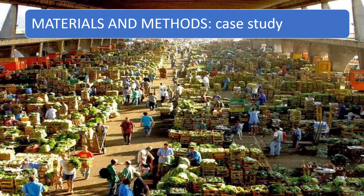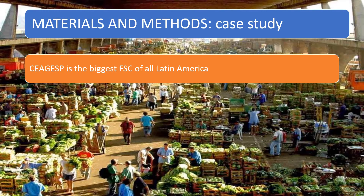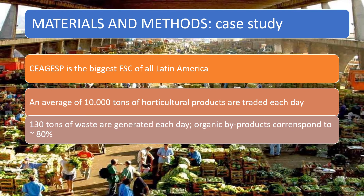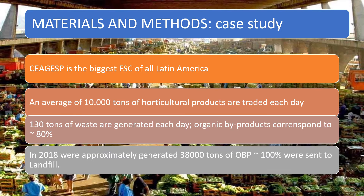Case study. Seagespi is the biggest food supply center in all of Latin America. An average of 10,000 tons of horticultural products are traded each day, and 130 tons of waste are generated each day — organic byproducts correspond to 80%. In 2010, 38,000 tons of organic byproducts were generated and were all sent to landfill.